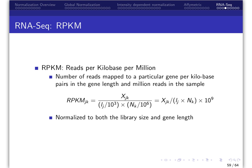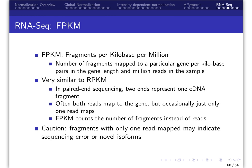Second, RPKM, which is number of reads mapped per kilobase pairs in the gene length. A related method, FPKM, is the number of fragments mapped to a particular gene per kilobase pairs in the gene length and million reads in the sample.